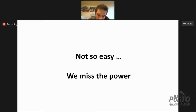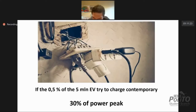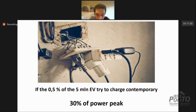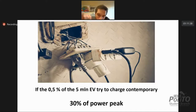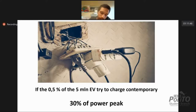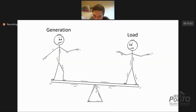But it's not easy, because we have the energy, but what we miss is the power. If just 0.5% of the first scenario — 5 million electric vehicles — try to charge simultaneously, we get a 30% power peak. That means in the consumption curve we saw before, we can get peaks of 30% extra load. We go back to the problem of balance between generation and load — and you know what happens: the pylons start to jump again.